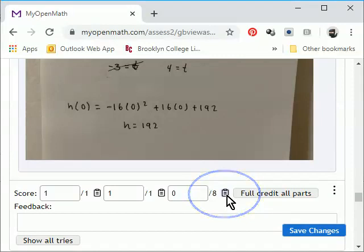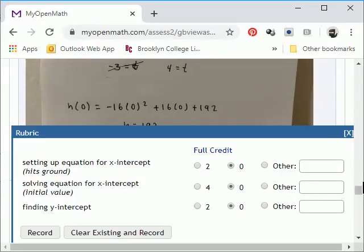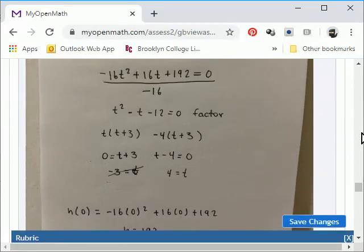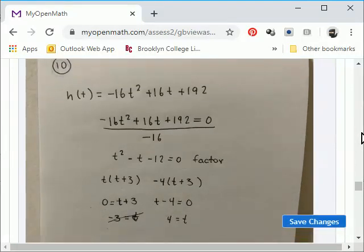Clicking on the clipboard pulls up a rubric. And if you choose to use the rubric, you can look at the student's work and then check off whether they've done certain things in the problem. So the first thing on the rubric is setting up an equation. So we might take a look at the student's work. So we can see they set up an equation.